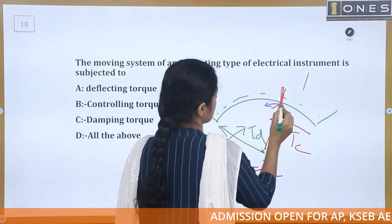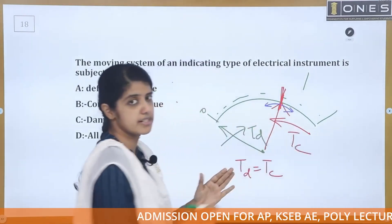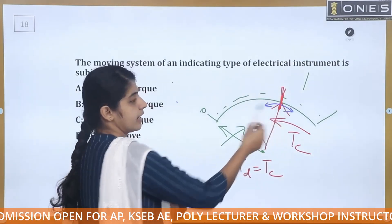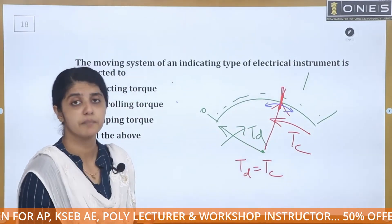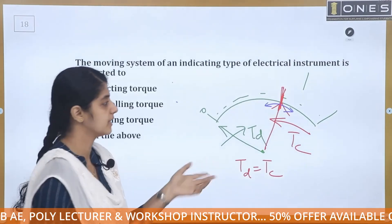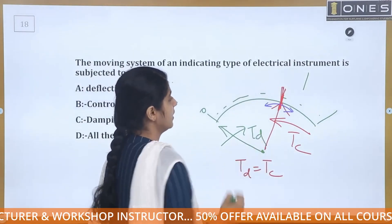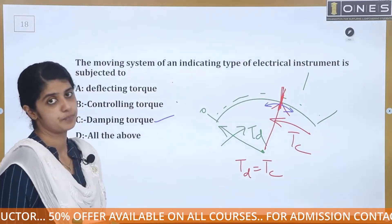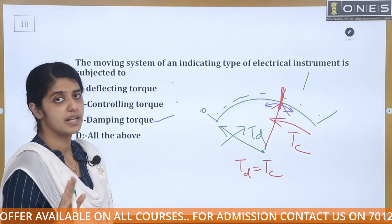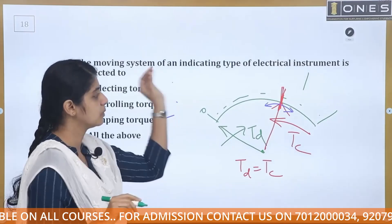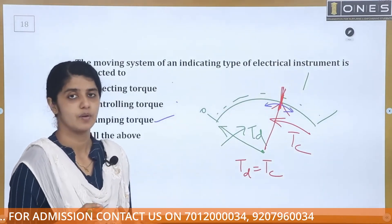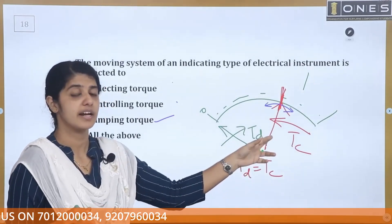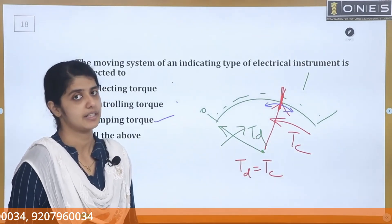The third torque is the damping torque. Without it, the pointer oscillates. The damping torque damps out oscillations so the pointer reaches the correct reading quickly. All three torques — deflecting, controlling, and damping — are active in the moving system.